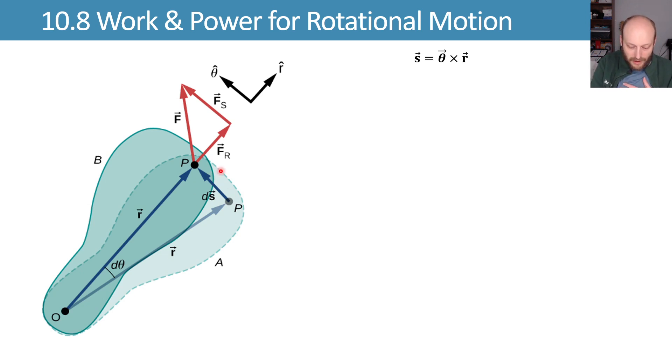That little bit amount of displacement ds then is equal to d theta cross r, and we can use the product rule to expand that out to d theta cross r plus dr cross theta. We'll note that for a rigid body, dr is zero.